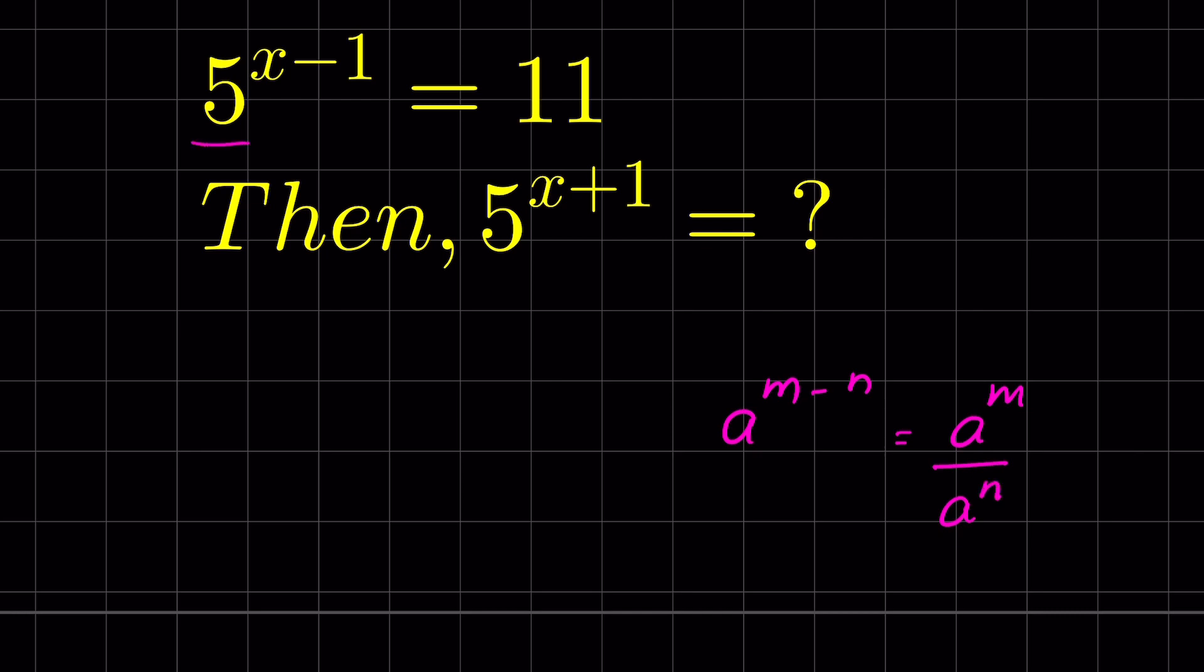So here 5 raised to the power x minus 1, it is in the form of a raised to the power m minus n. So it will be 5 raised to the power x upon 5 is equal to 11.